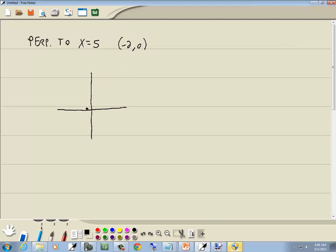Well, negative 2, 0 passes through that point, so let me go ahead and plot that. There's negative 2, 0.